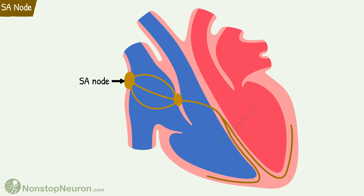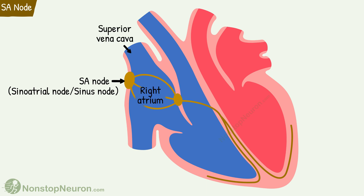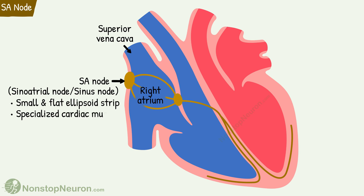The SA node, or sinoatrial node, is also called the sinus node. It is located in the right atrium near its junction with the superior vena cava. It is a small and flat ellipsoid strip of specialized cardiac muscle.